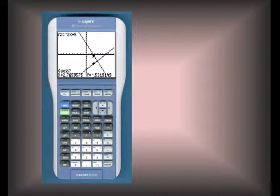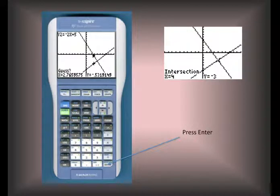After you press enter, you'll get something that says guess. I usually just let the calculator do the guessing for me, and I press enter one more time. Then I get a screen that actually shows me the point of intersection where x is equal to 4 and y is equal to negative 3. This is the same as the ordered pair 4 comma negative 3, which shows the solution to this system of equations.